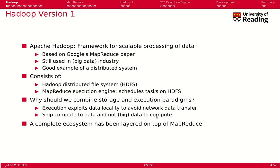Let's get started with Hadoop version 1. Hadoop is a framework for scalable processing of data. It's based on Google's MapReduce paper and is widely used in the big data industry. In fact, there has been a complete ecosystem layered on top of the MapReduce idea and the Hadoop file system.